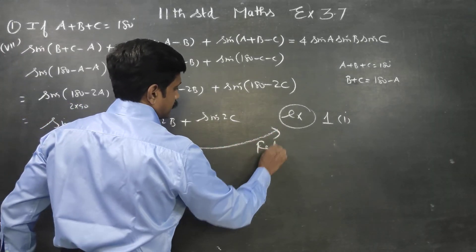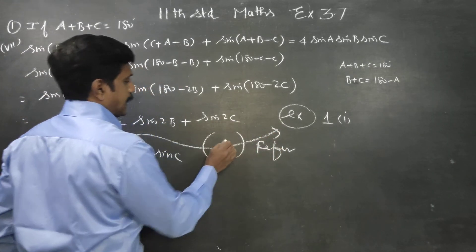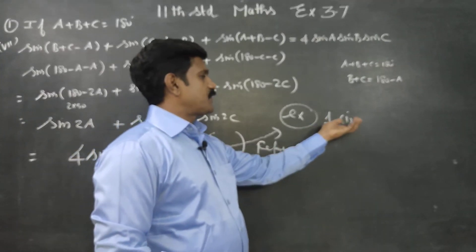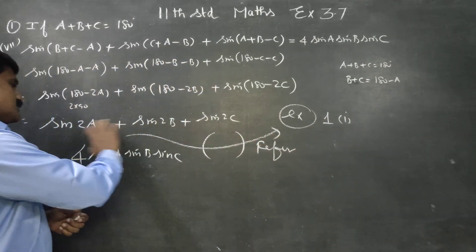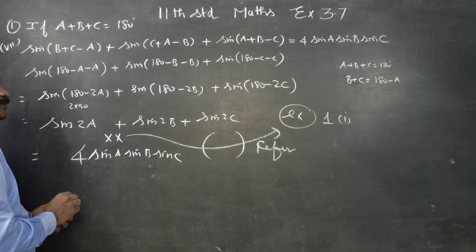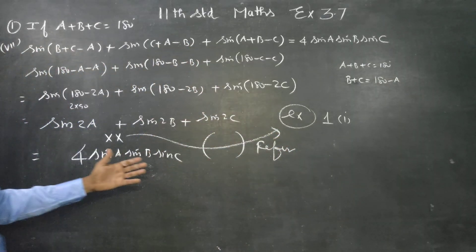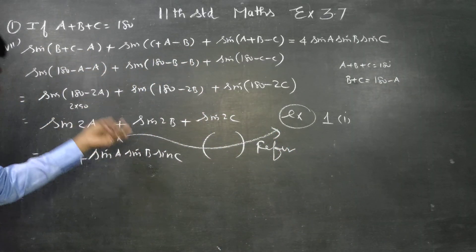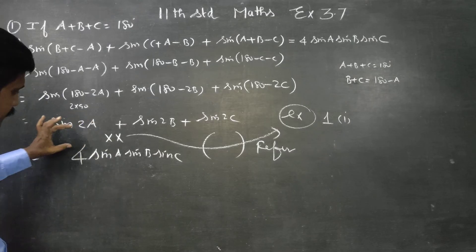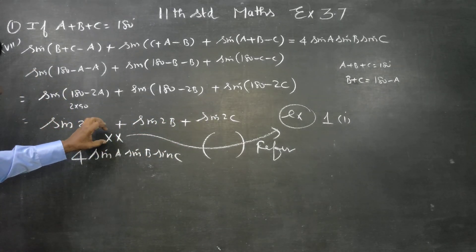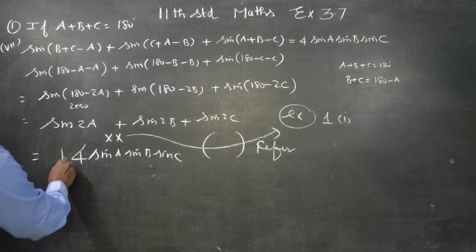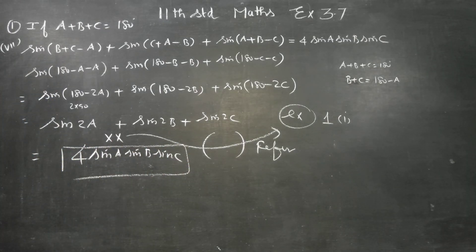We have to refer and fill up the gap here. First sum, first subdivision, the full proof is there. Same sum we have done, you can refer the YouTube. First sum has 6-7 steps, hence proved. And now already we have proved the sum, sin 2A plus sin 2B plus sin 2C, please refer exercise number 3.7, sum number 1, first subdivision. Thank you.